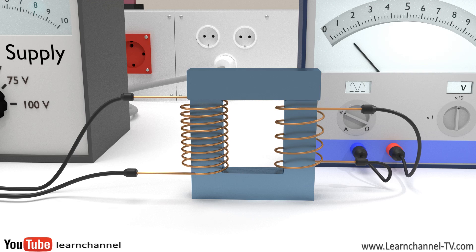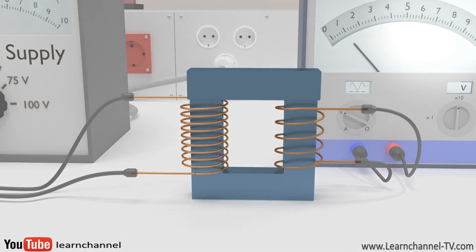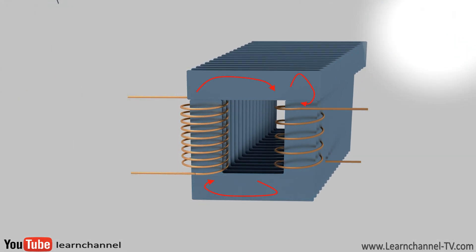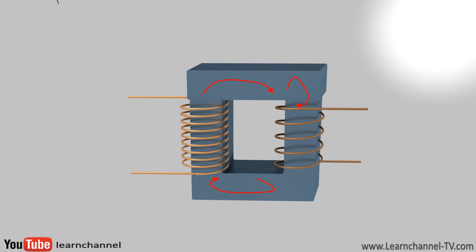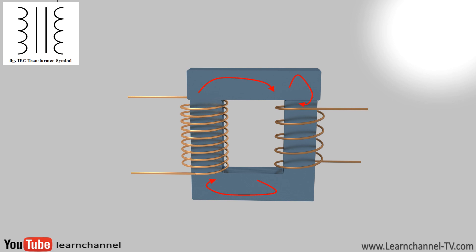By the way, this soft iron core consists of a pack of laminated steel, which is electrically insulated. Why so? The problem is that a voltage is also induced within the iron core leading to eddy currents. These eddy currents cause heat and power losses. So you have to interrupt the path of eddy currents, and that's the way to do so.